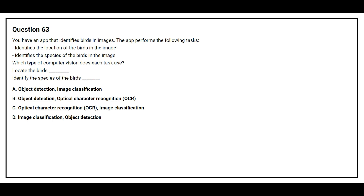Option 63: You have an app that identifies birds in images. The app performs the following tasks: the object identifies the location of the bird in the image, and identifies the species of the birds in the image. Which type of computer vision does each task use? The correct answer is Option A: Object Detection, Image Classification.